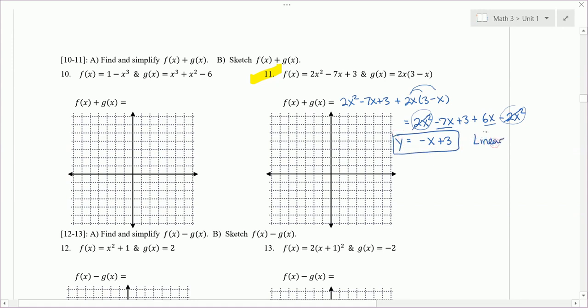So y equals negative x plus 3 is what we want to graph. Notice it's linear and it's translated up 3. The parent graph point is at 0, 0, but we move it up 1, 2, 3. We just need to find some other points. If I pick maybe x equals 1, plug that in, I end up with y equals negative 1 plus 3, which is 2. So 1, 2. If I pick the point 2, I end up with y equals negative 2 plus 3, which is positive 1. See they line up. And there's my graph.